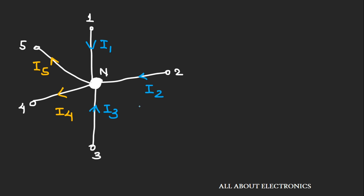Here we use the following sign convention: whenever the current is entering into the node, we will consider it as a positive current. While if current is leaving the node, then we will consider it as a negative current.